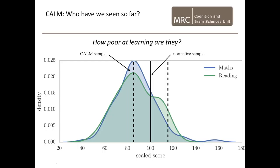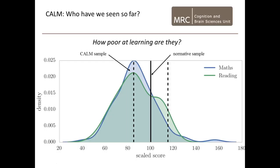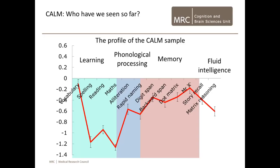The first question you might ask is: how poor at learning are these kids? Looking at standardized literacy and numeracy measures, 100 is exactly where you'd expect the kids to be. You can see that on average the kids in the CALM sample are about a standard deviation below the age-expected mean. You can express the profile of the children as a whole in terms of standard scores. The kids have been referred on the basis of learning problems, and indeed the sample as a whole has a pretty strong learning problem — around a half to two-thirds of a standard deviation below what you'd expect for their age on phonological processing, memory, and fluid intelligence measures.